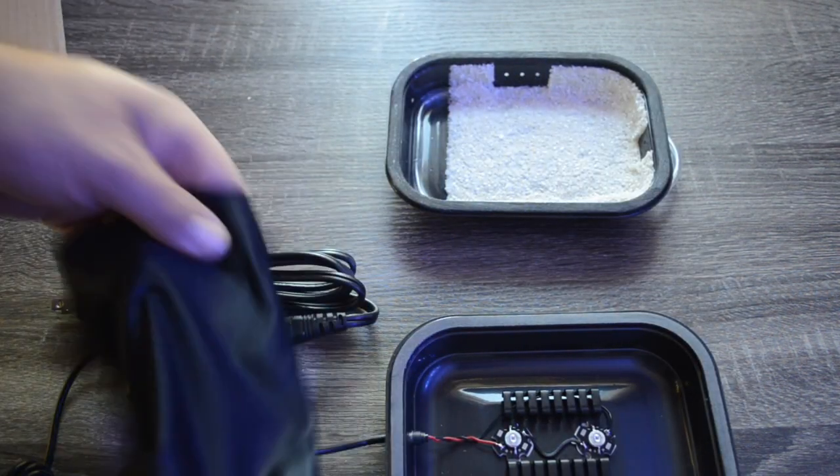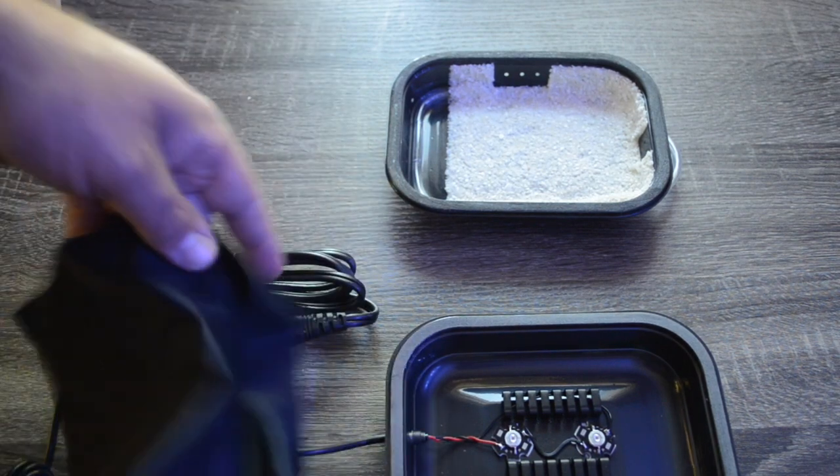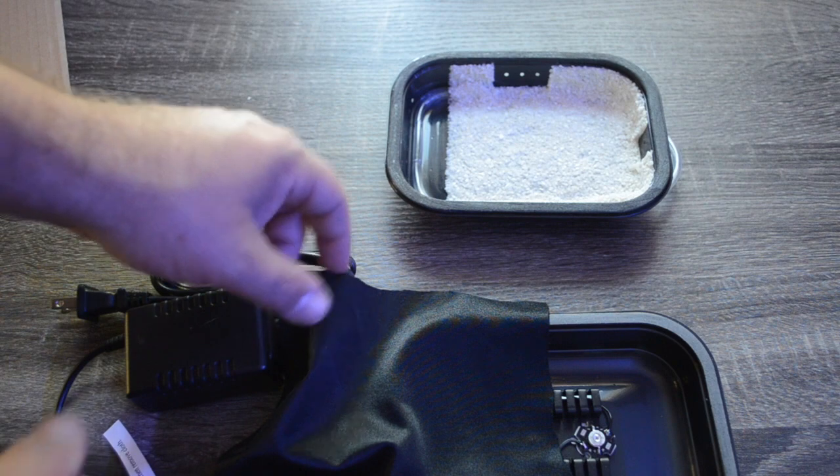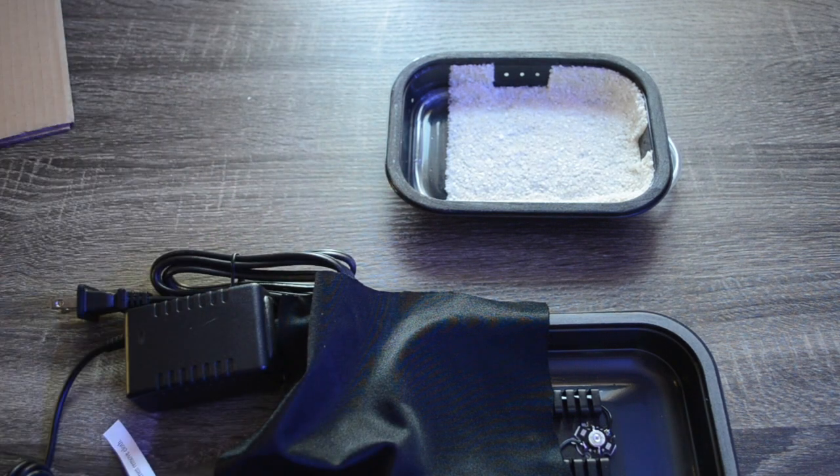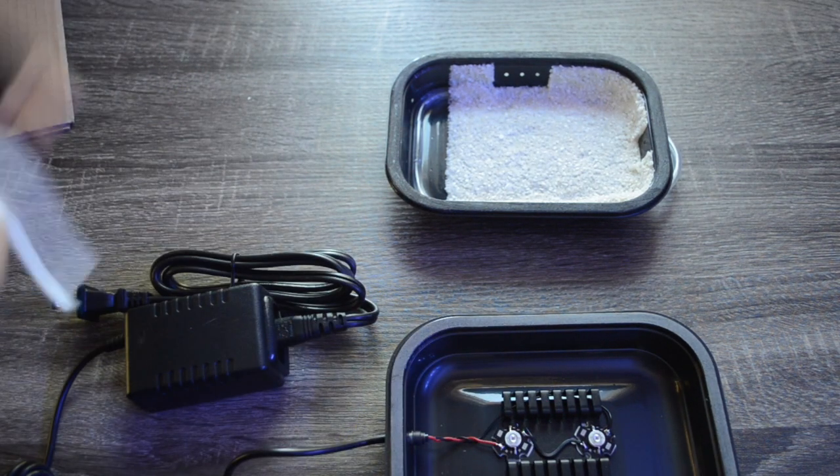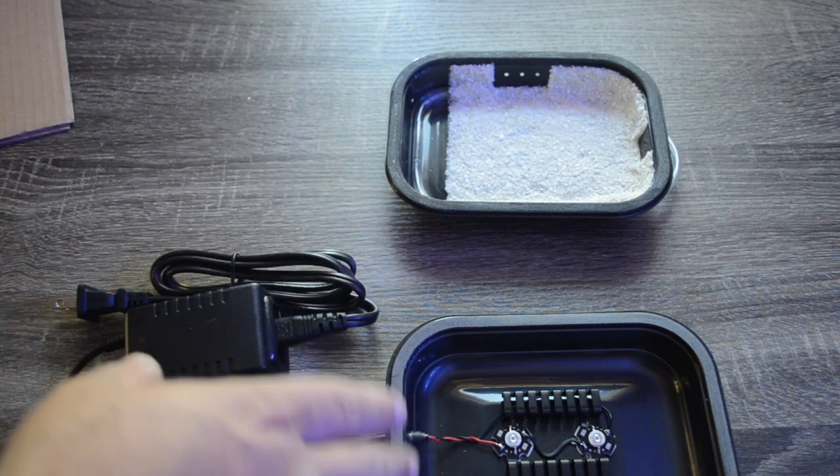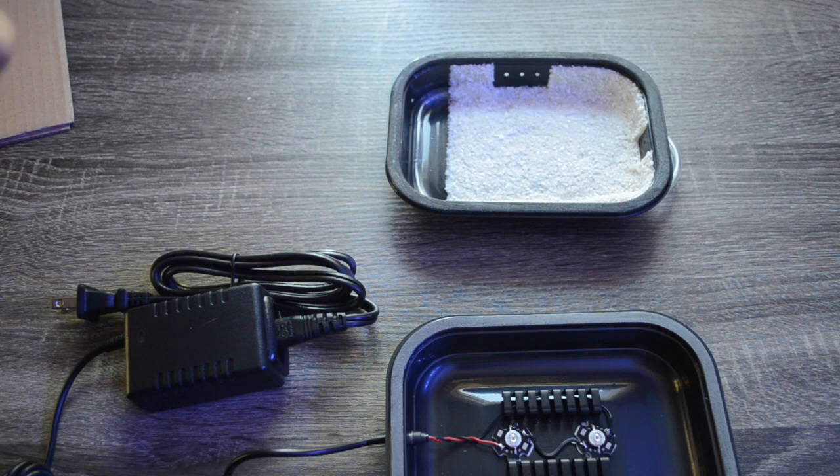So this blackout cloth that comes with it is basically, when you're first starting to use this product, you want to cover up one of the LED lights until the algae starts to grow. Then you remove it and then use both lights so you can give the algae the full power of the two three-watt red LEDs and really boost that growth.